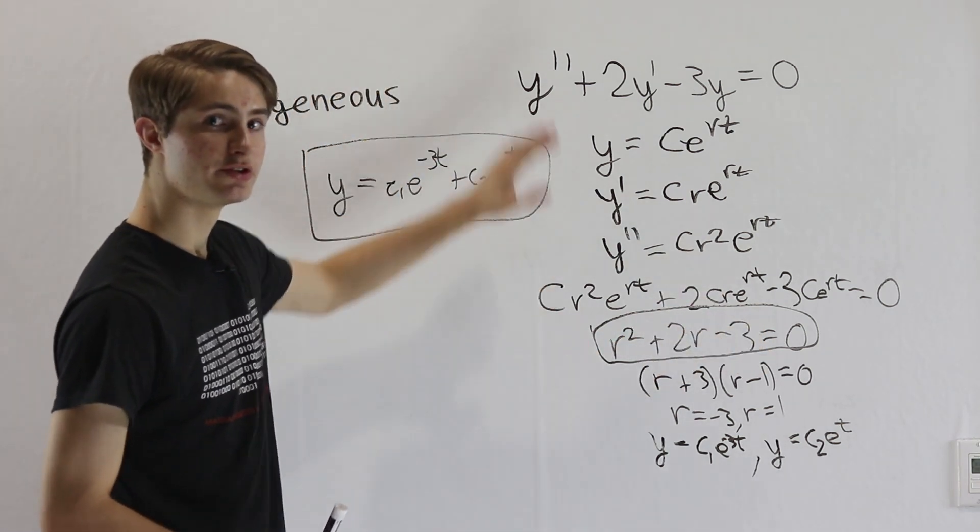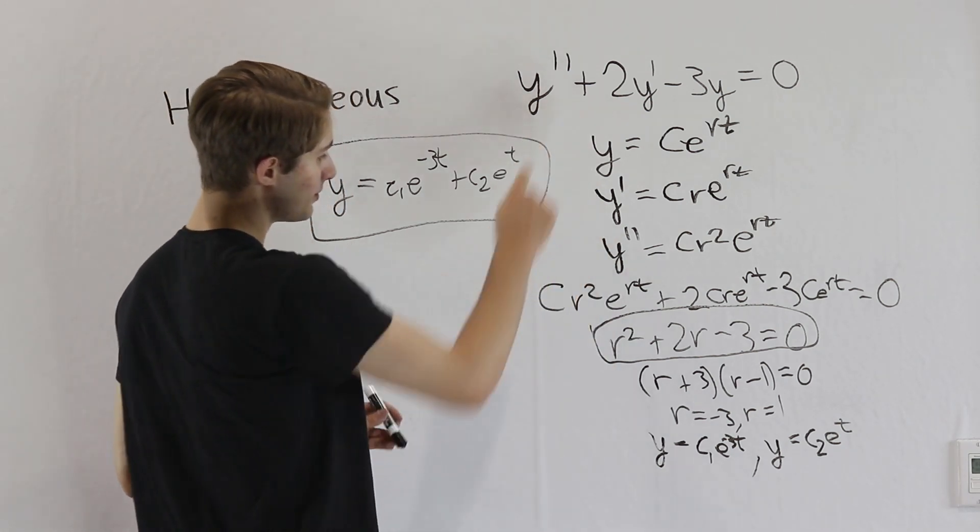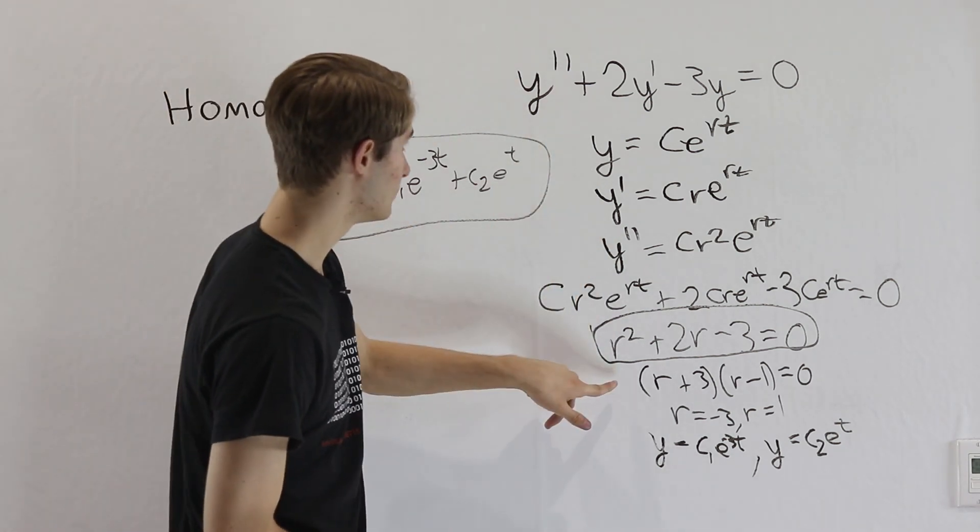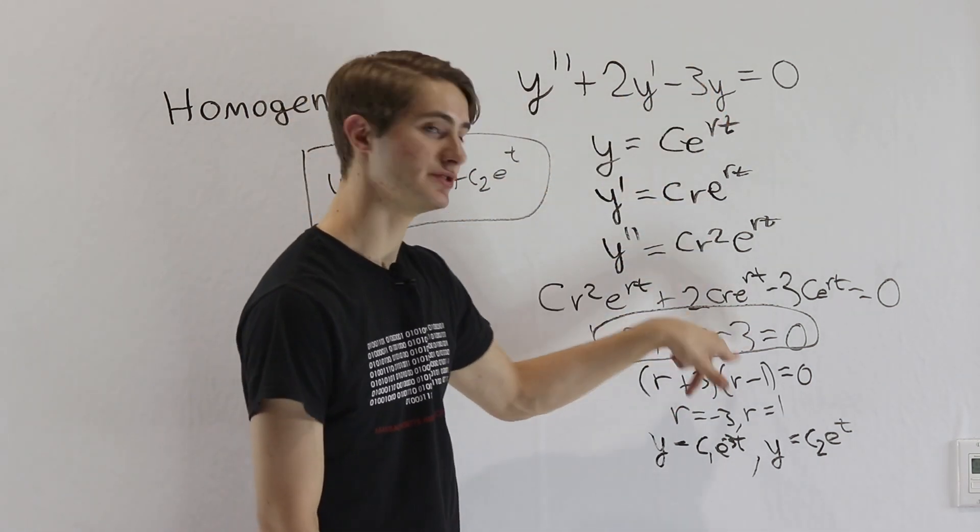Now notice some similarity between these two equations, right? We have a y double prime, and that turns into an r squared. y prime turns into r, and 3y just turns into a 3.